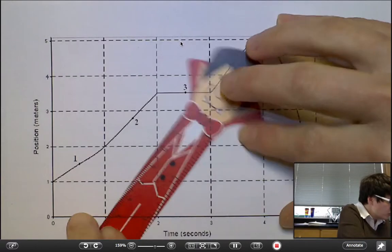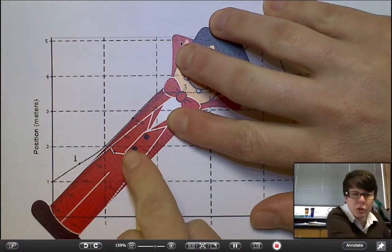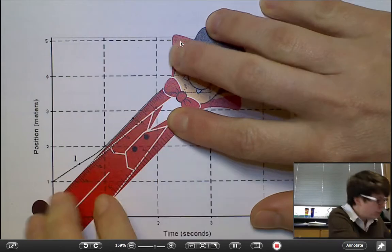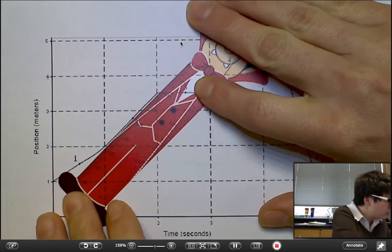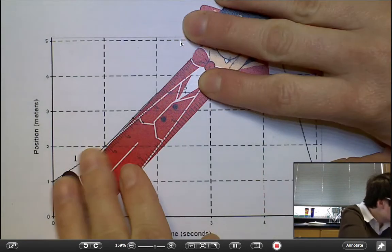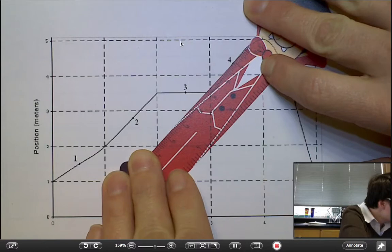And I'm going to find the slope here of the line at point two. Here we go. And I'm going to attempt to move my vampire ruler parallel to this line without rotating it over to four.